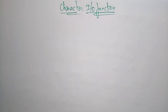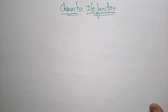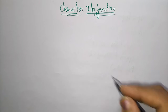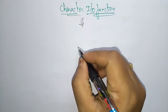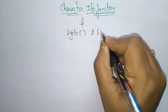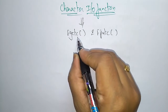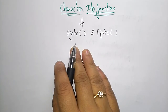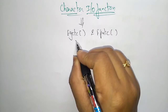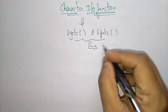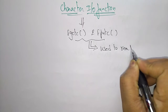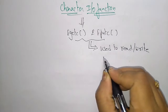Welcome students. In the previous video I explained about the string I/O functions. Now, what are the character I/O functions? The character I/O functions are nothing but fgetc and fputc. Here 'c' represents character, 'get' is for reading, and 'put' is for writing. They are used to read and write one character at a time.